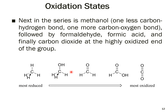Moving along the series: methanol (CH3OH) has one fewer C–H bond and one C–O bond, making it more oxidized than methane. Formaldehyde has two bonds from carbon to oxygen — more oxidized than methanol. Formic acid (carboxylic acid) has three bonds to oxygen, and finally carbon dioxide has four bonds to oxygen, representing the most oxidized state.